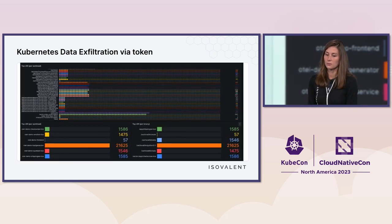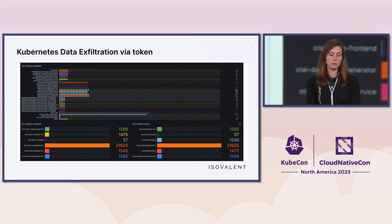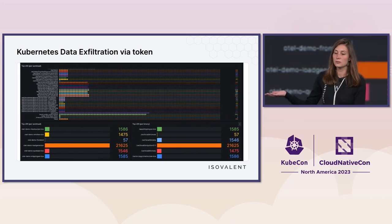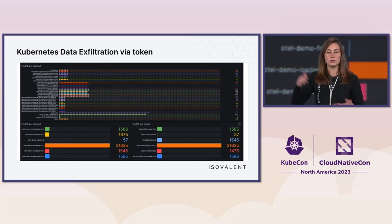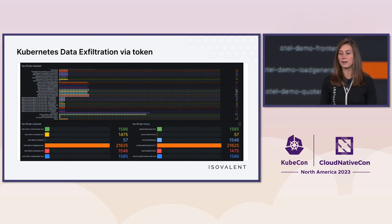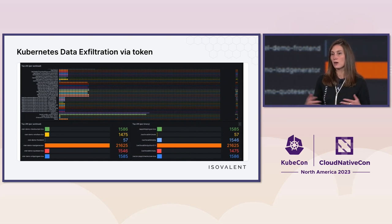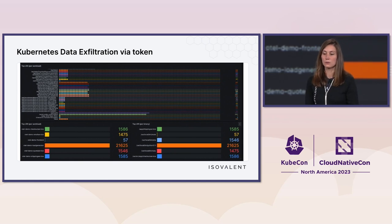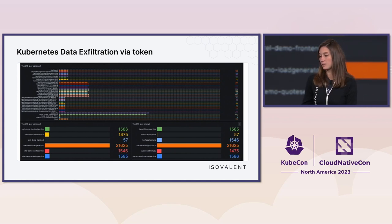Here's another screenshot from the dashboards where you can see all the URIs queried by a workload, and then how many times — and you could do a sum per workload or per binary.